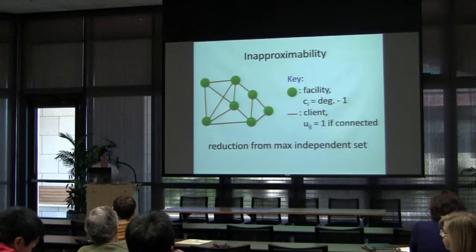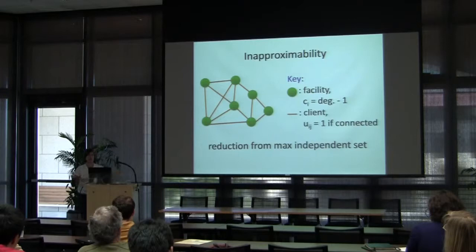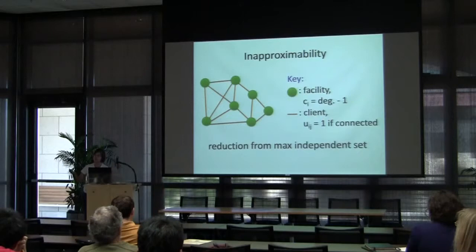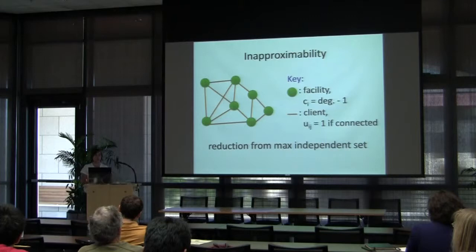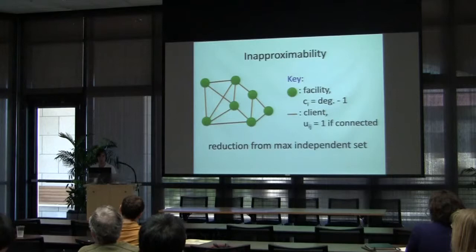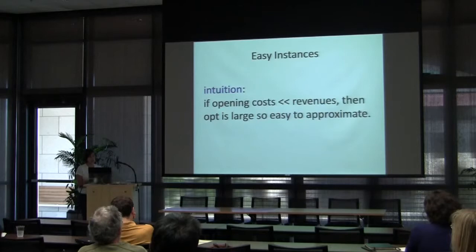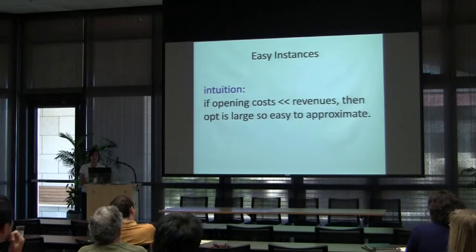Nonetheless, it's a very natural problem, so people have looked at it in the literature. Ways to handle it include adding a large constant to the objective to make it always positive and get a multiplicative approximation, assuming input is drawn from some distribution and giving probabilistic guarantees, or restricting to particular input instance families. We would like to take the instance as given and still provide some kind of guarantee.